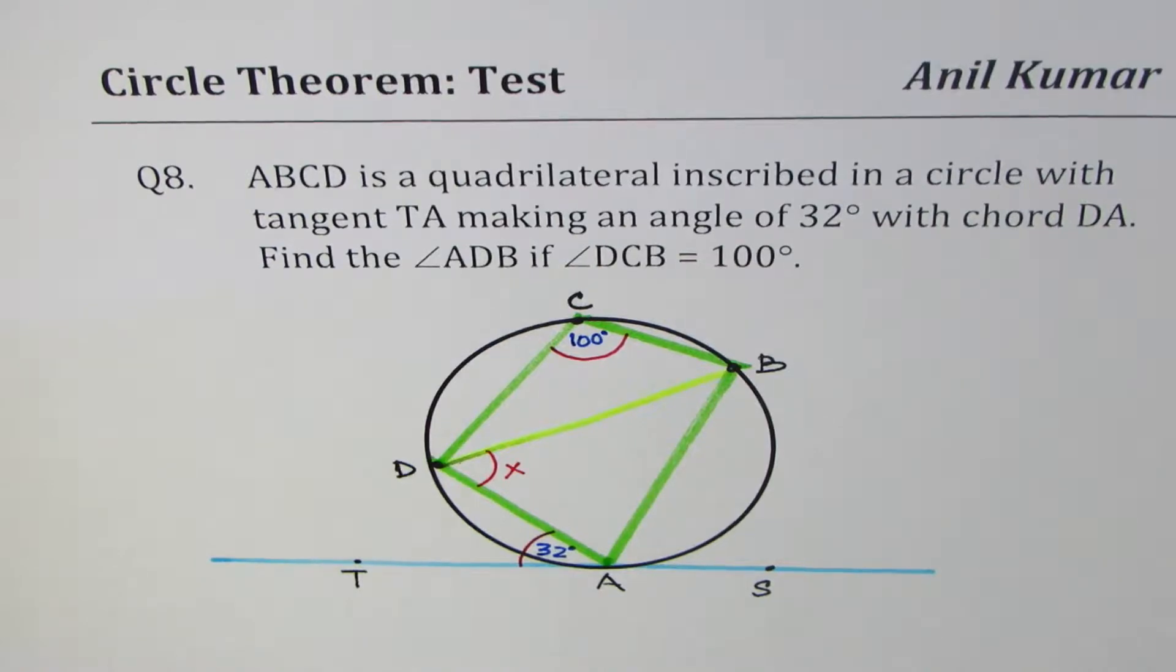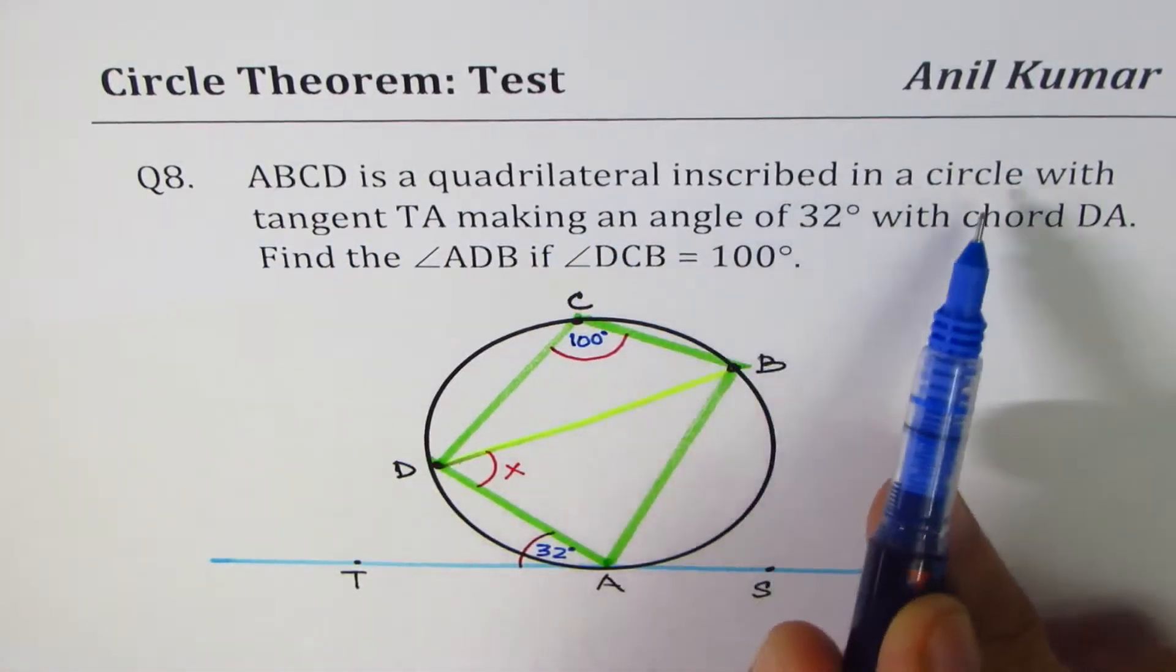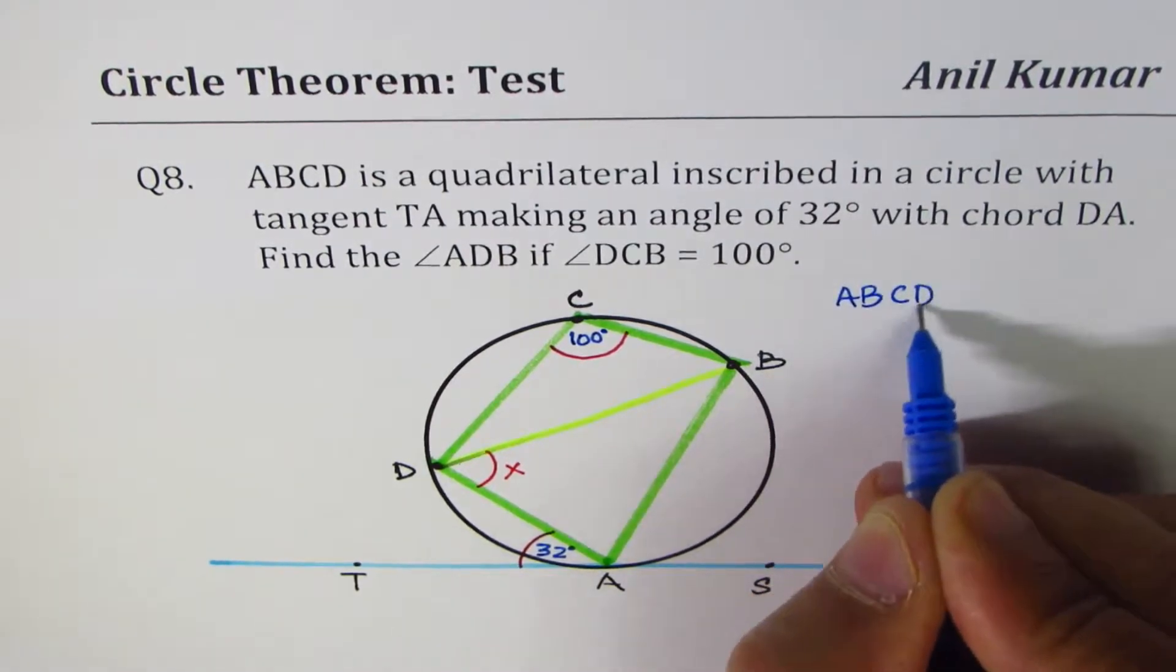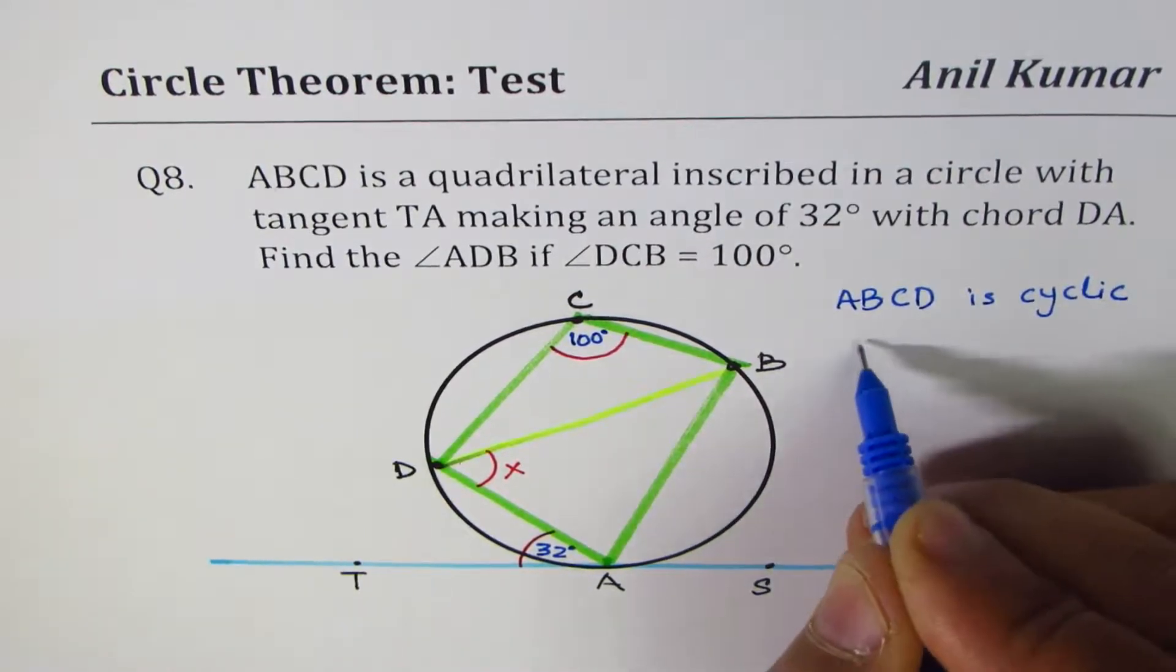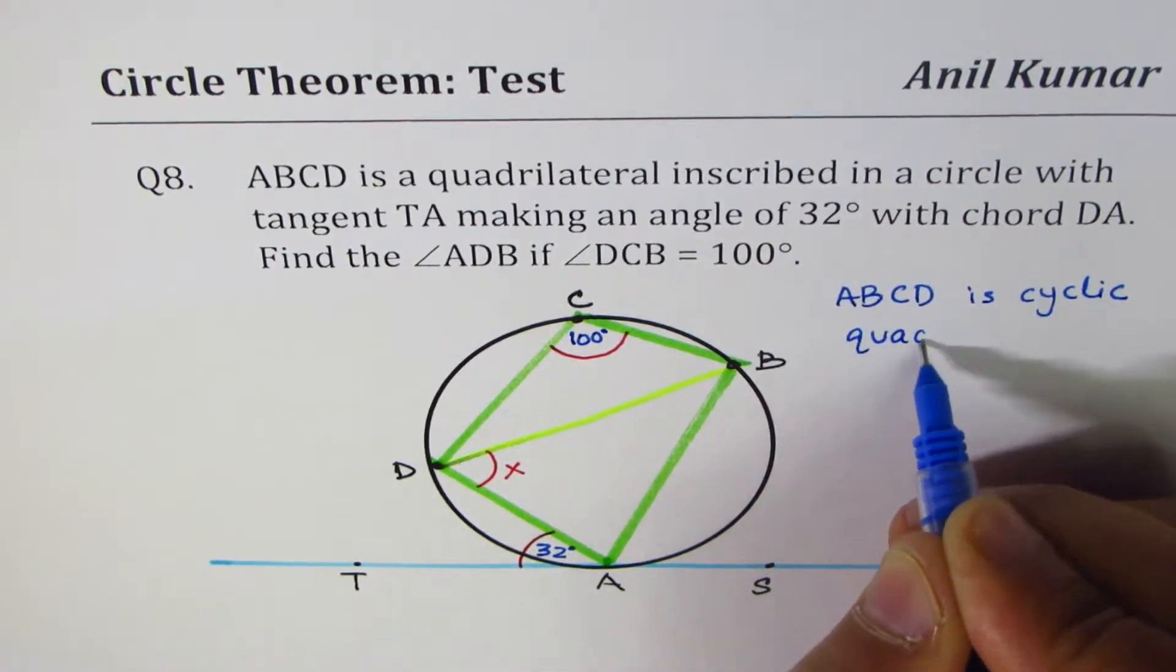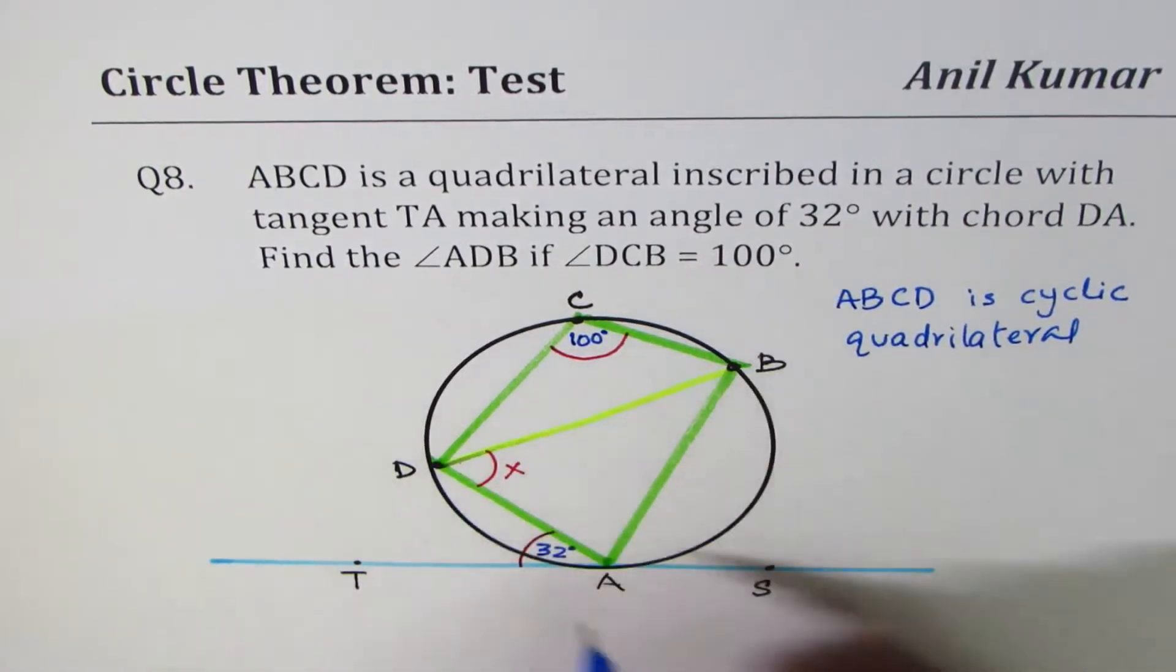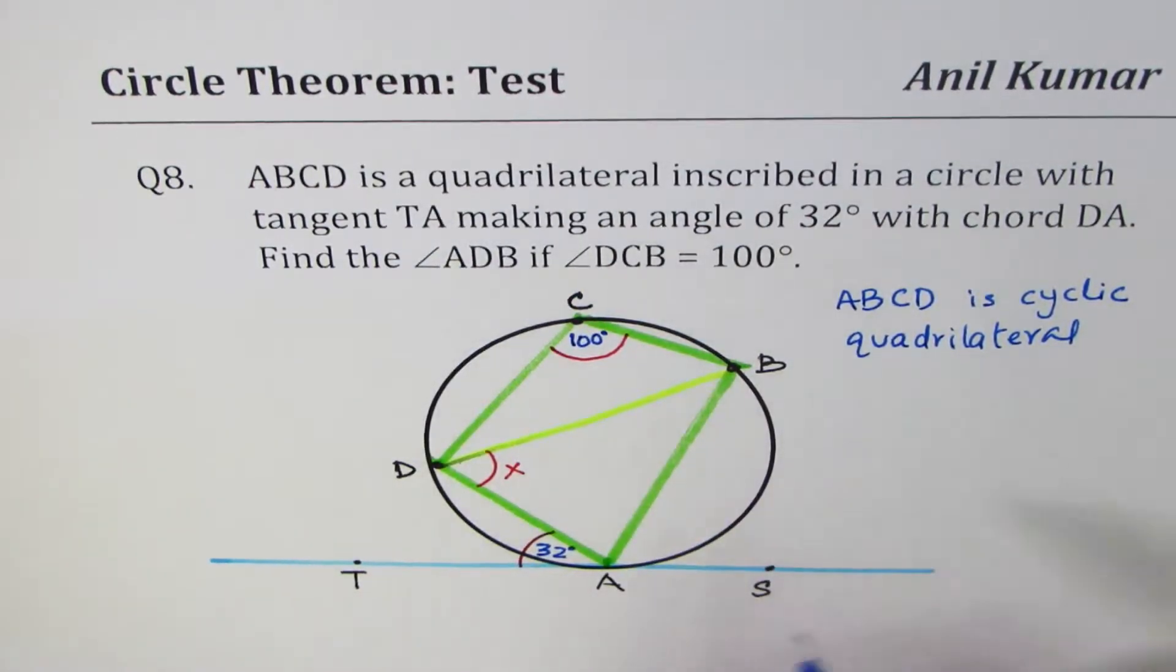Now, to find this angle, we can use circle theorem. When we say ABCD is a quadrilateral inscribed in a circle, that means ABCD is cyclic quadrilateral. All four points are on the circumference. So there's an alternate way of saying that ABCD is a cyclic quadrilateral.